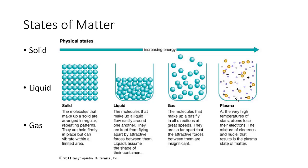At very high temperatures, plasma forms as atoms start losing their electrons. We'll talk more about atomic structure later, but that's all we'll cover about plasma for now.